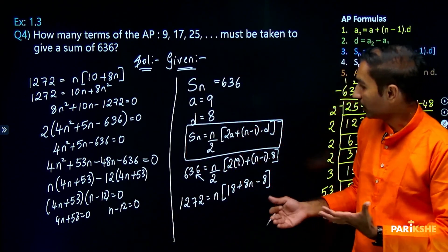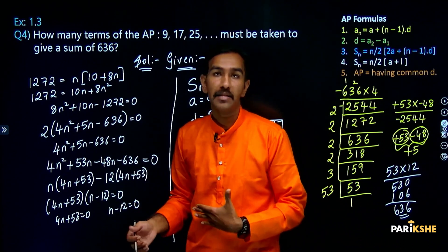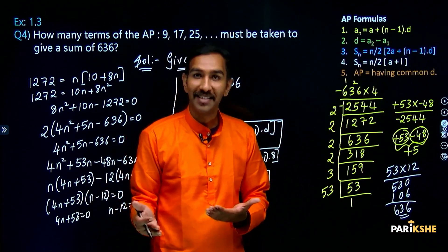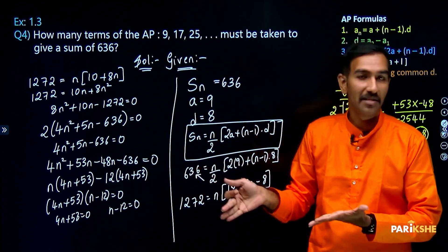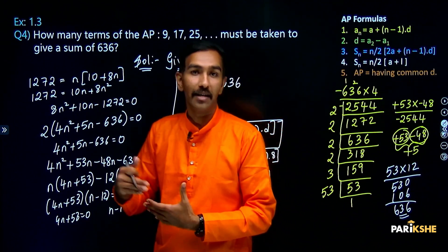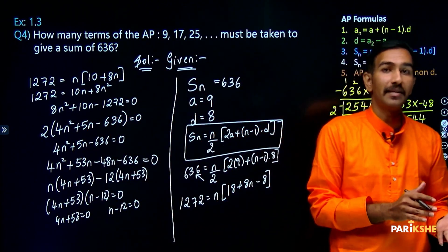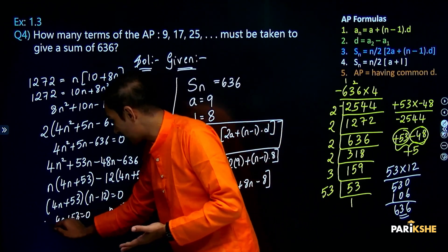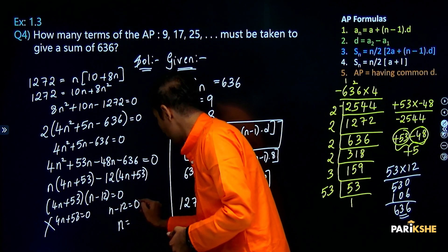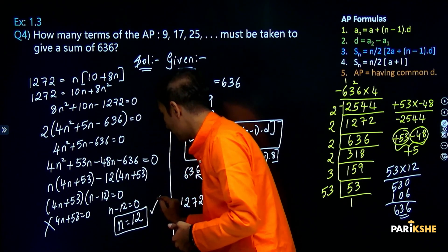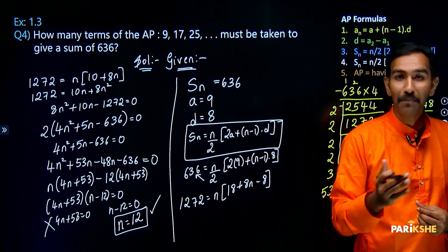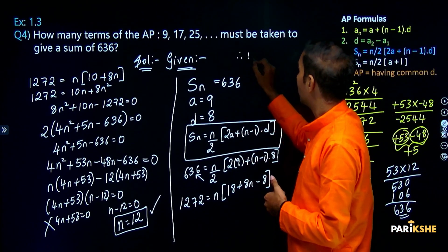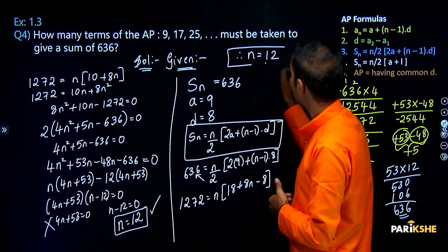So which value is correct? From 4n + 53 = 0, n = minus 53/4. Number of terms cannot be negative — this is discarded. From n minus 12 = 0, n is equal to 12. Therefore n is equal to 12 — so 12 number of terms of the AP will give us a sum of 636.